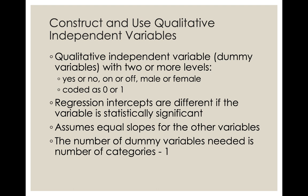You don't have any other options for dummy variables. One of the options gets a zero and the other one gets a one. Regression intercepts are different if the variable is statistically significant. It assumes equal slopes for the other variables. And the number of dummy variables needed is the number of categories minus one.